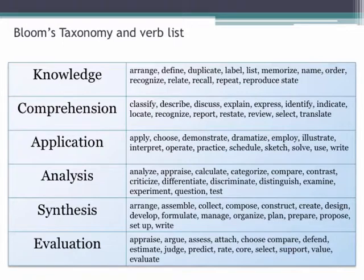Looking at Bloom's levels in more detail: knowledge is about defining, memorising, recognising, and recalling information. Comprehension is about explaining. Application is being able to apply that knowledge. Analysing involves appraising, calculating — a little more sophisticated — maybe criticising. Synthesising means bringing together different ideas from different areas of a subject. And finally, evaluating means appraising and judging ideas — for example, evaluating the theories we read about in the field of learning and teaching.